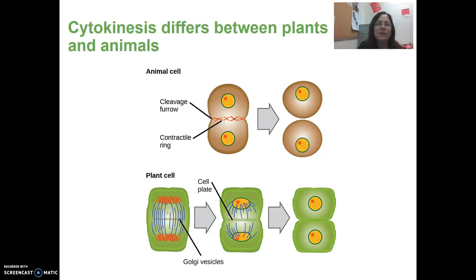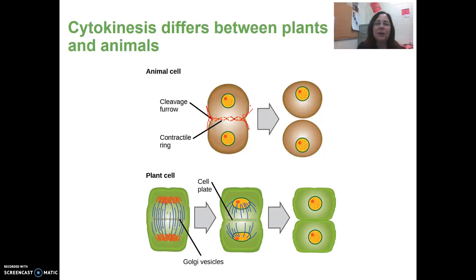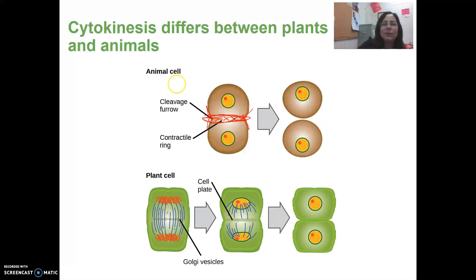Here is an illustration of cytokinesis in animal cells versus plant cells. In an animal cell, a cleavage furrow or indention forms between the two cells, and a contractile ring forms in the middle, getting smaller and smaller, causing the cell to split in half.